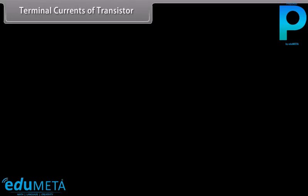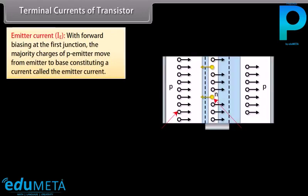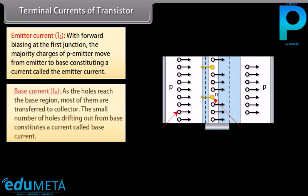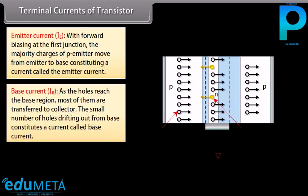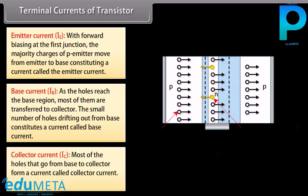Considering a PNP transistor: the emitter current IE is constituted by majority charges of the P emitter moving from emitter to base under forward biasing. The base current IB is the small number of holes drifting out from the base. The collector current IC is formed by most of the holes going from base to collector. The relationship is: IE = IB + IC. The current concepts are the same in PNP and NPN, except all currents are directed opposite in the two cases.